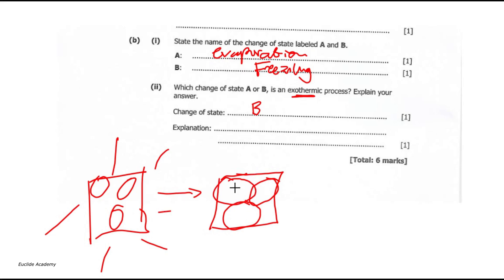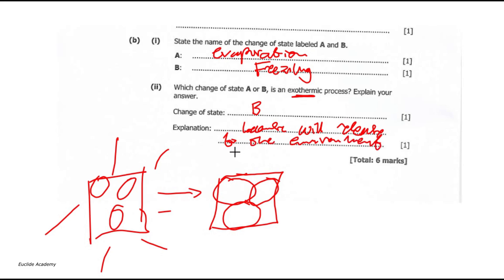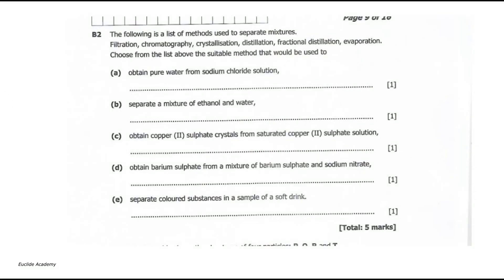They have to lose heat in order to be packed together — if they kept the heat they wouldn't pack together. So process B, freezing, is exothermic. The explanation is that particles release heat to the environment in order to bond or to remain close together.